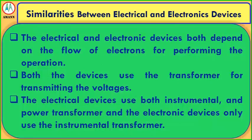Similarities between electrical and electronic devices: both depend on the flow of electrons for performing operations. Both use transformers for transmitting voltages. Electrical devices use both instrumental and power transformers, whereas electronic devices only use the instrumental transformer.